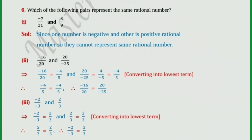Second pair: minus 16 upon 20 and 20 upon minus 25. Minus 16 upon 20 equals minus 4 upon 5 — divide 16 and 20 by 4. And 20 upon minus 25 equals 4 upon minus 5, dividing by 5, which we can write as minus 4 upon 5. Therefore, minus 4 upon 5 equals minus 4 upon 5, so minus 16 upon 20 is equal to 20 upon minus 25. Both rational numbers are the same.